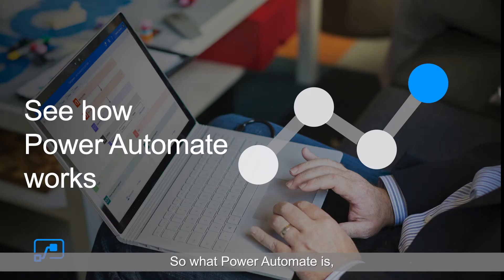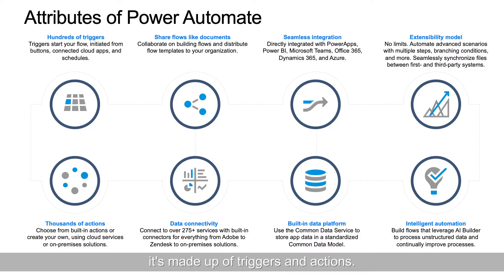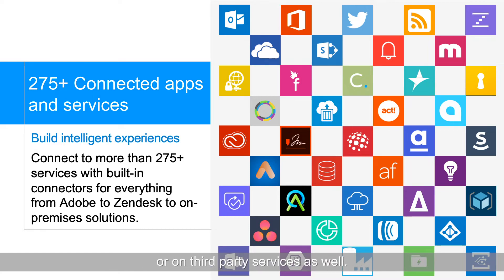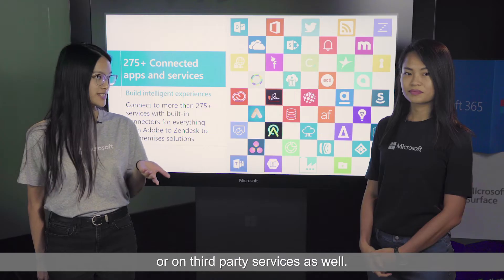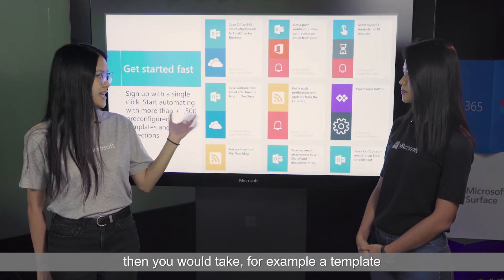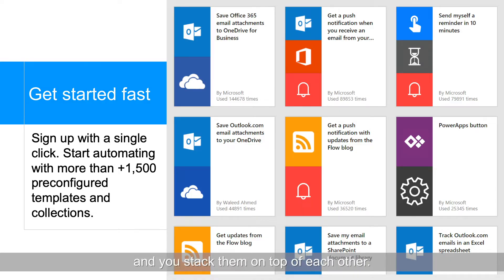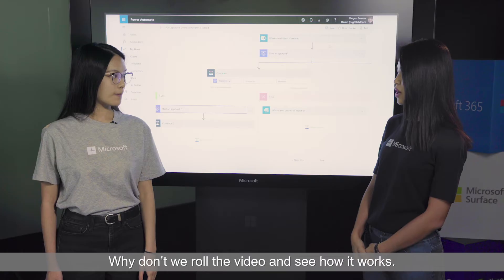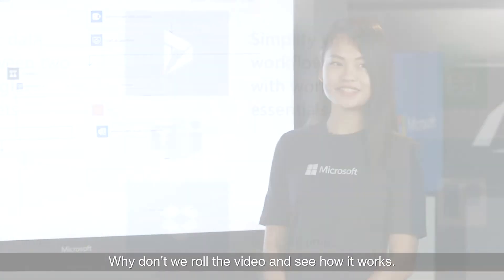Power Automate is made up of triggers and actions. Triggers are built on 270 connected data services — these can be data sources on Azure or on third-party services as well. What you do is take a template and stack them on top of each other, so a trigger can call a string of actions. Let's roll the video and see how it works.